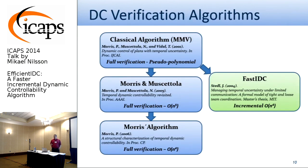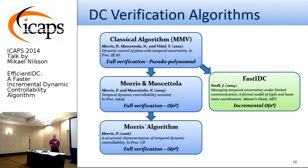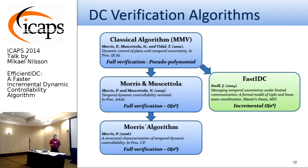If we look at the algorithms available from the start of this year, we have four algorithms. The first is by Morris, Muscettola, and Vidal from 2001. This was elaborated on by Morris and Muscettola and Morris to reach the N^4 algorithm mentioned before. Both of those use a different notation than the original. On a parallel track, we have the incremental Fast IDC algorithm, developed by John Stedl and people from Brian Williams' group. This is what we chose to implement.